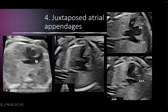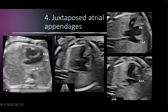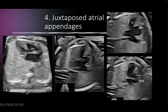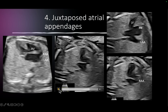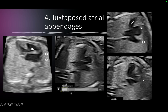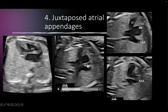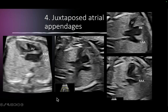Juxtaposed atrial appendages means that both atrial appendages are on one side — either on the right side or on the left side. You notice here: this is the left atrial appendage, which is the large one. As we scroll forward, you see the smaller appendage, which is the right atrial appendage. Both appendages are lying on the right side of the fetus — or both appendages are lying over the left atrium. Remember, the left atrium was on the right side in this case.